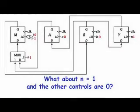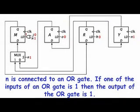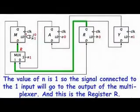What about if N is equal to 1 and the other controls are 0? N is connected to an OR gate. If one of the inputs of an OR gate is 1, then the output of the OR gate is 1. The value of N is 1, so the signal connected to the 1 input will go to the output of the multiplexer. And this is the register R.